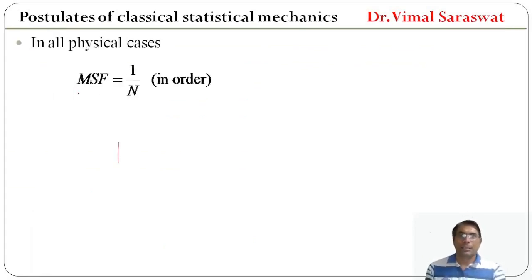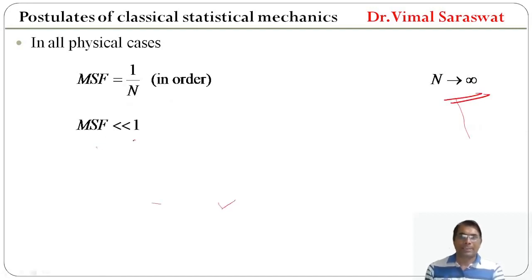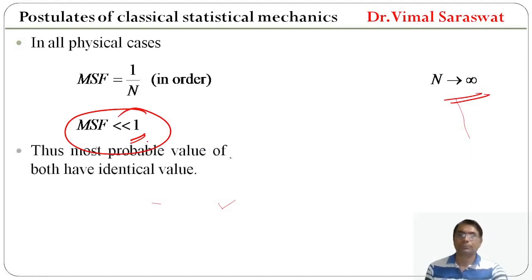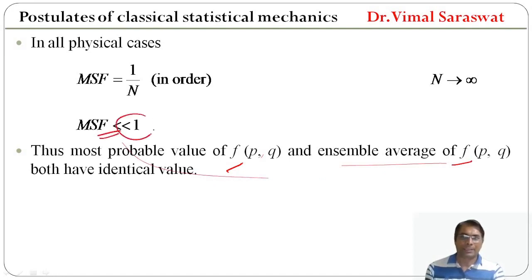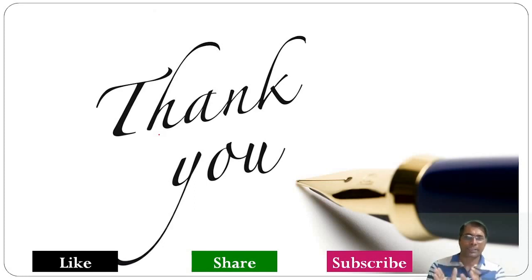In all physical cases, the mean square fluctuation is of order 1/N. Since N is very large — tending to infinity — the mean square fluctuation is much less than 1. Therefore, the ensemble average of f and the most probable value of f have identical values. Here we end our session. In today's lecture on statistical mechanics we discussed the postulates of classical statistical mechanics. Goodbye.